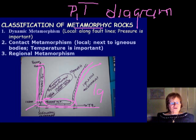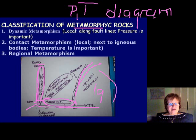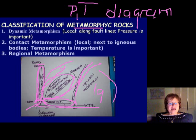The other type is contact metamorphism, where temperature is mostly important and pressure is not. It also occurs locally, around igneous intrusions — when an intrusion comes into surrounding rocks and changes them, we call it contact or thermal metamorphism. The large diagonal area on the PT diagram represents the metamorphic environment, which we call regional or dynamo-thermal — meaning pressure and temperature increase at the same time.